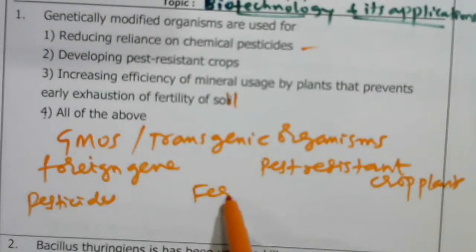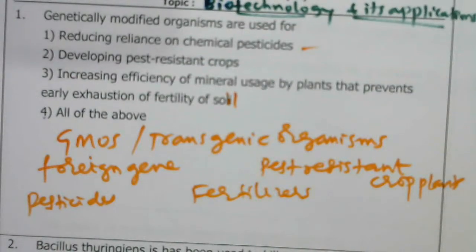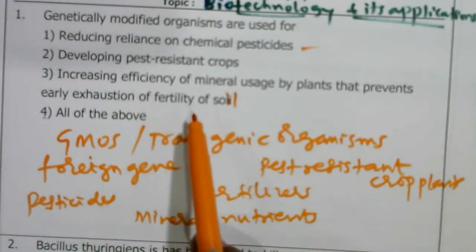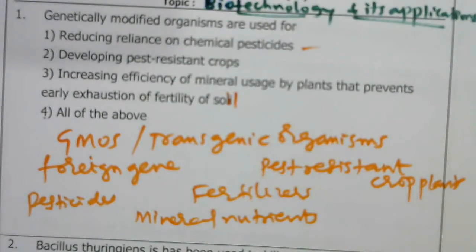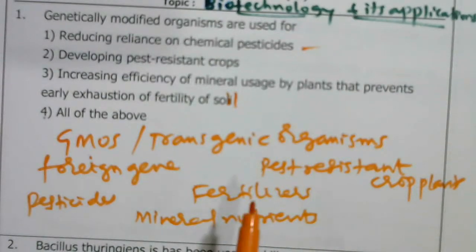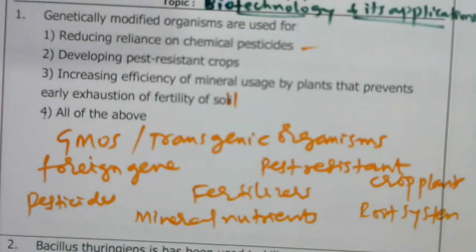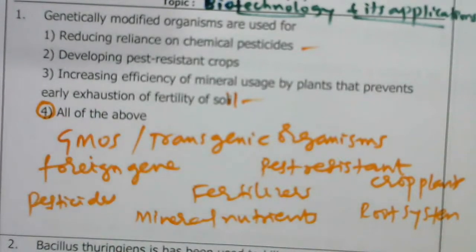When you apply fertilizers, some crop plants fail to absorb the mineral nutrients from soil. By increasing the efficiency of mineral usage, even if small amounts of mineral nutrients are present in the soil, the plant should be able to absorb them through the root system. So the answer includes all of these options.